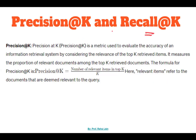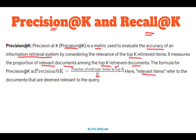Here we are going to discuss about Precision@K and Recall@K. Precision@K is a metric used to evaluate the accuracy of an information retrieval system by considering the relevance of top K retrieved items. It measures the proportion of relevant documents among the top K retrieved documents. The formula for Precision@K is: number of relevant items in top K retrieved items divided by K.